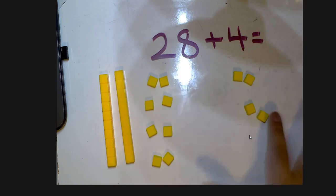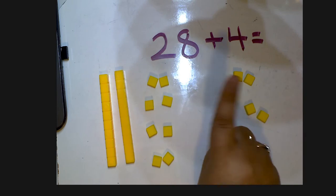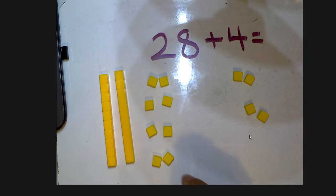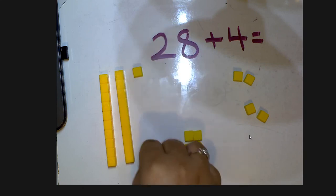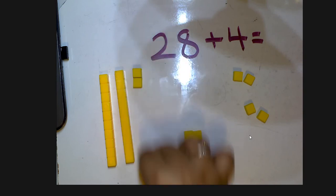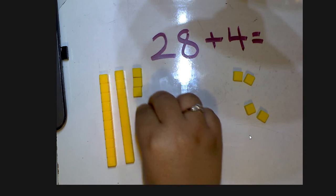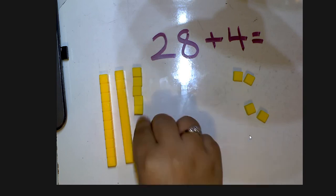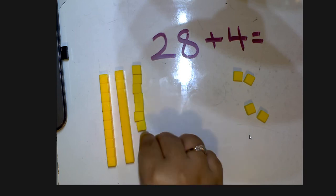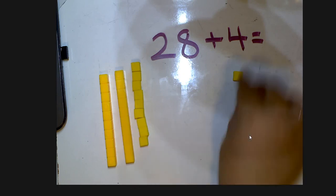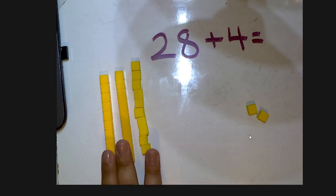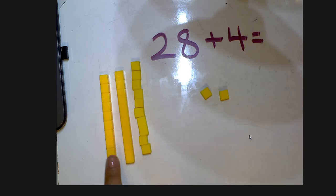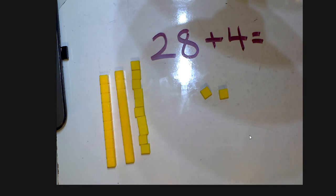No, you can't. So what we have to do is regroup — we need to make another ten. How many of these ones do I use to make a ten? If you said 10, you are correct: 2, 3, 4, 5, 6, 7, 8, 9, 10 — so I made a new ten. So instead of two tens I now have three tens. Count it up: 10, 20, 30, 31, 32. So 28 plus 4 equals 32.